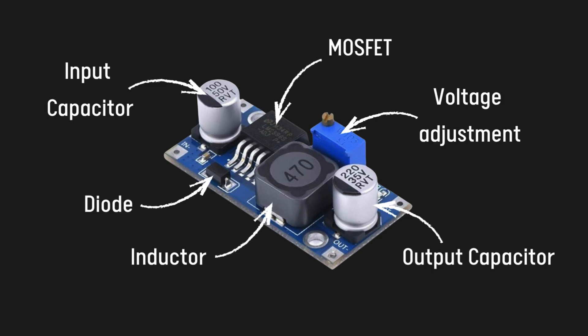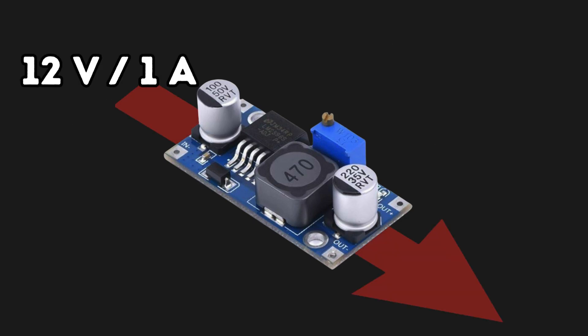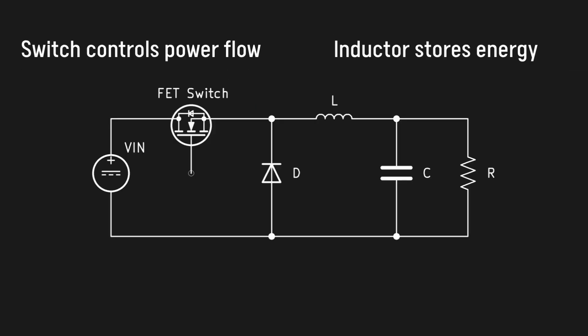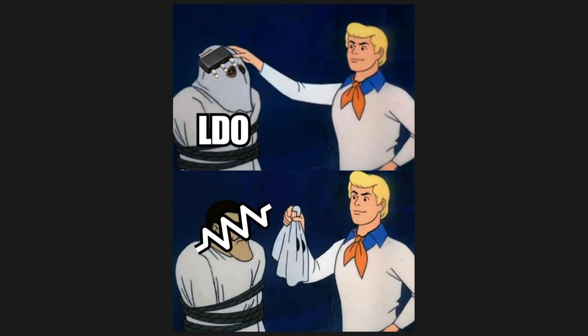Buck converters are circuits designed with a very specific purpose, to reduce voltage levels without wasting power. Because of their switching mode operation, they don't need to dissipate excess energy to regulate, making them far more efficient than traditional LDOs.